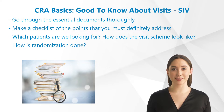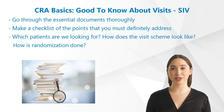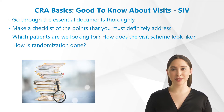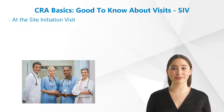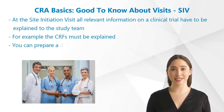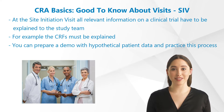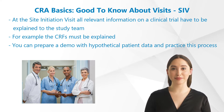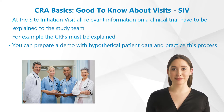The first three items serve to clarify questions, such as: which patients are we looking for? How does the visit scheme look like? How is randomization done? At the site initiation visit, all relevant information on a clinical trial have to be explained to the study team in a way that they can actually conduct the study.